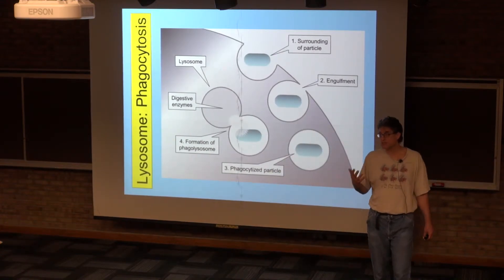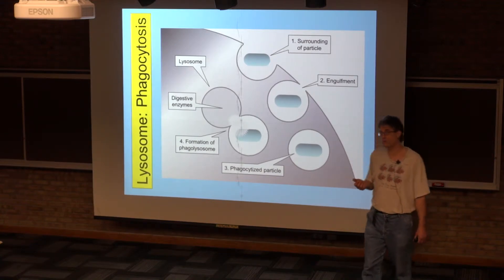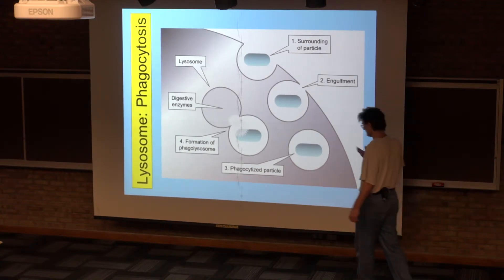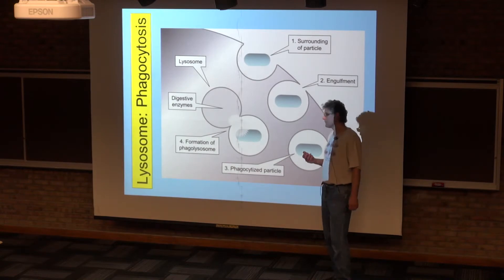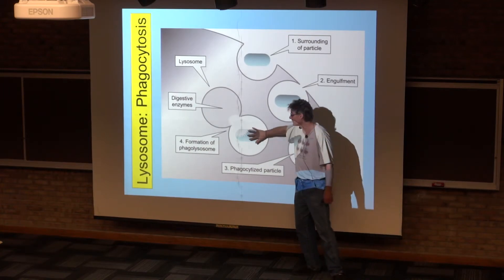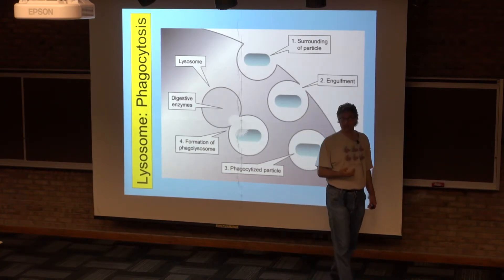The immune system has phagocytes that are responsible for getting rid of foreign bodies inside our bodies. There are certain pathogens, certain bacteria that are resistant to being broken down in various ways once they're inside the cell.